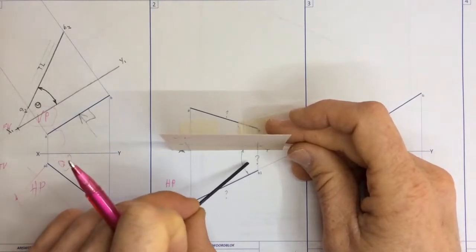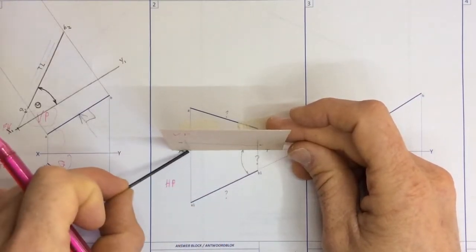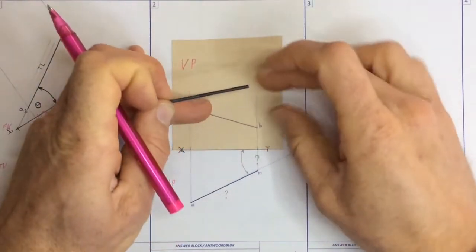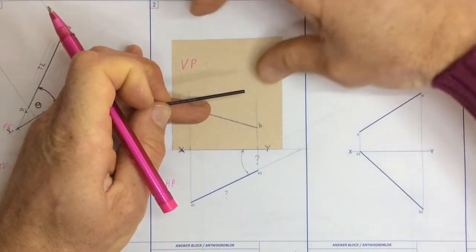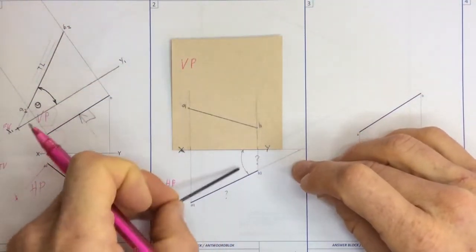But it does tell me that I must be using these measurements over here from the XY-axis to B1 and from the XY-axis to A1 when I'm going to be getting my true length, which must happen over here.